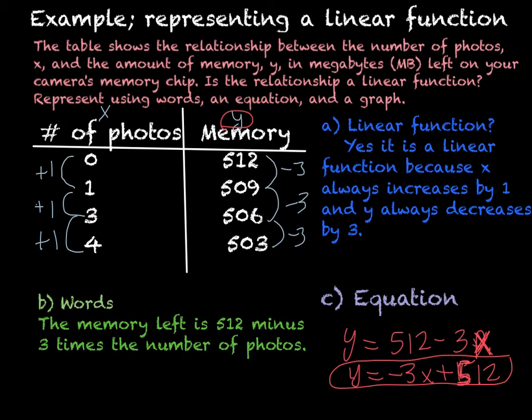You should graph this example the same way as the last one. Start at zero photos with 512 megabytes, then at one it's 509, then 506, then 503 — so it should be points going down.